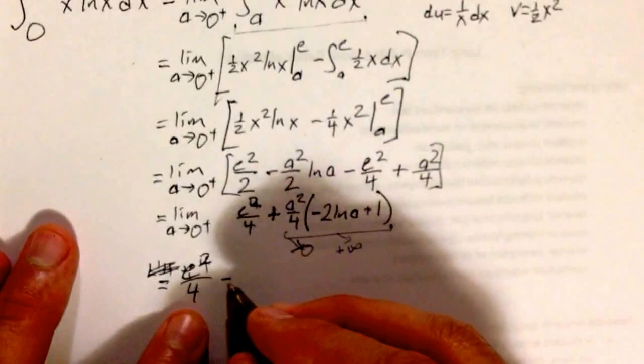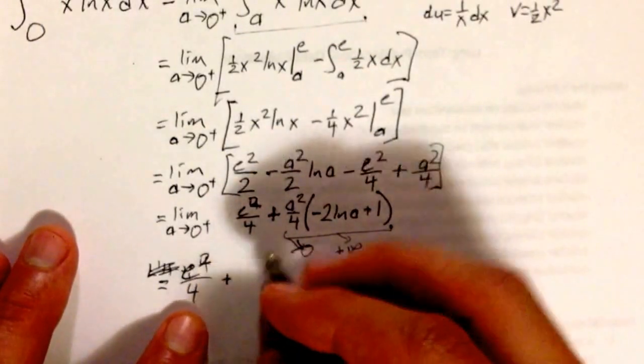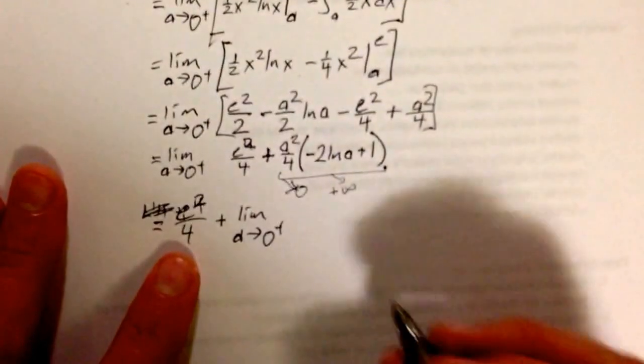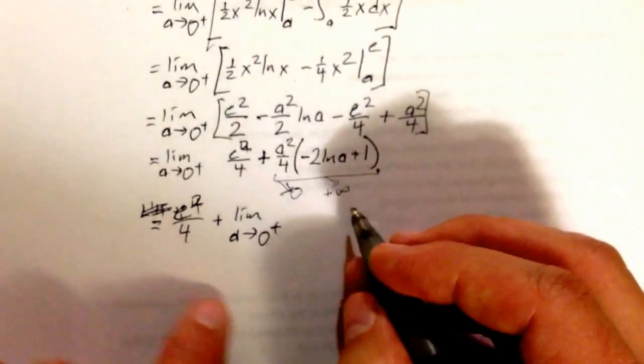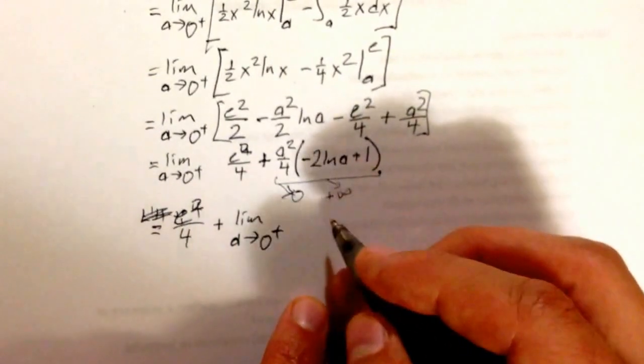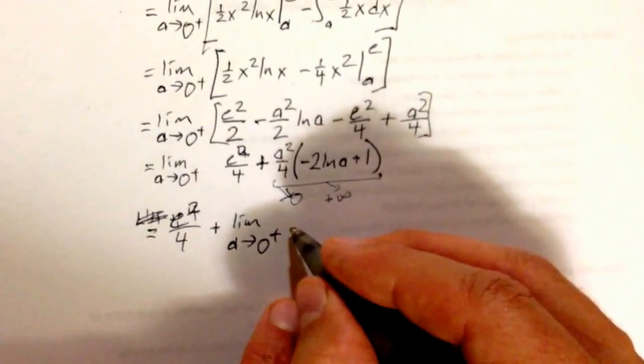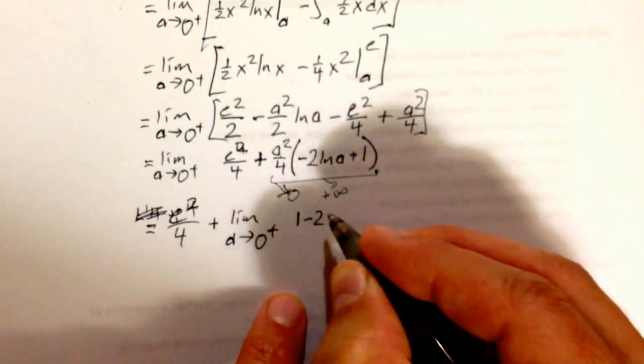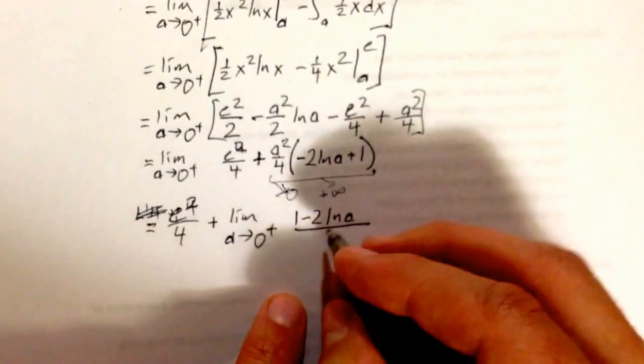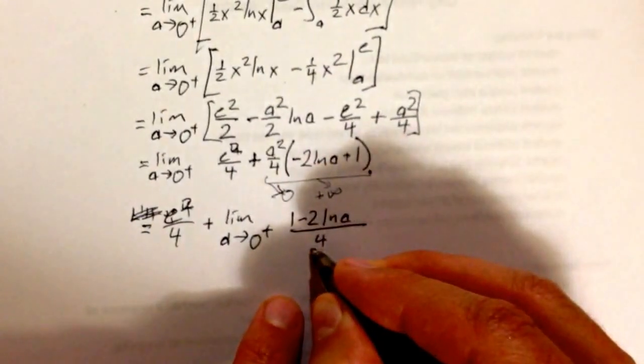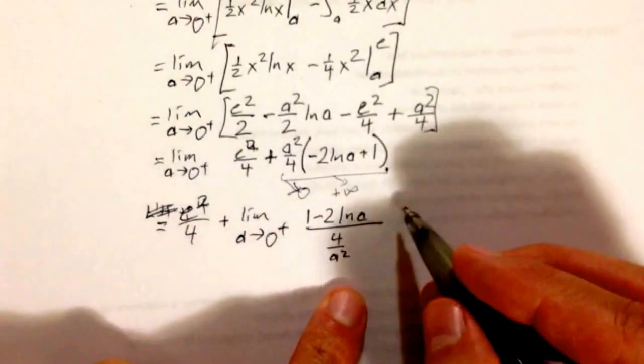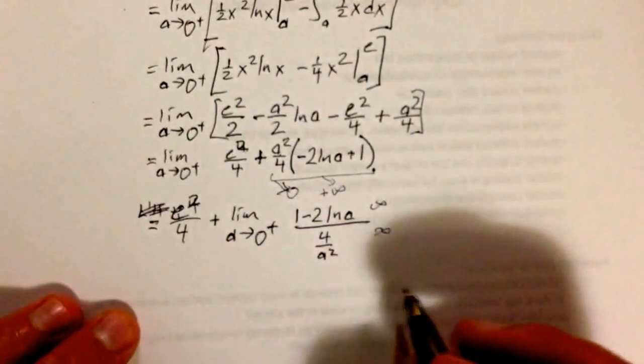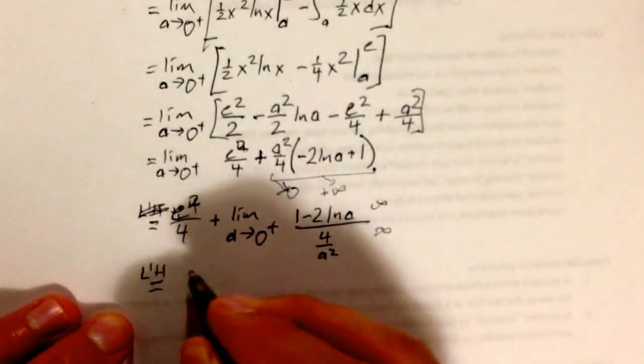the limit as a goes to 0 from the positive side of, if I make this 1 minus 2 natural log of a in the numerator, and then let's say 4 over a squared, now it's in the indeterminate form, infinity over infinity. So now I can apply L'Hôpital's in the classic method.